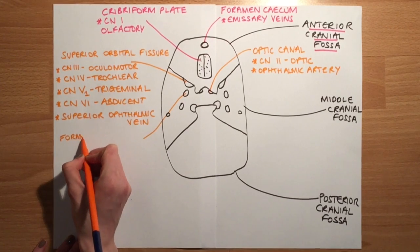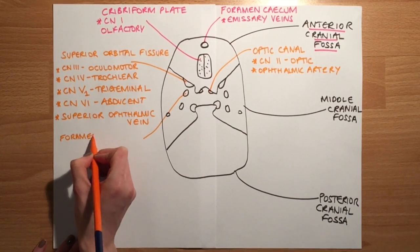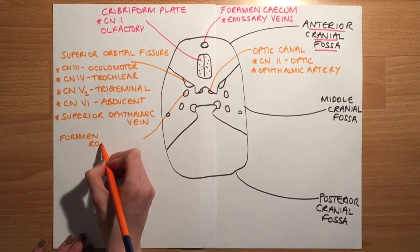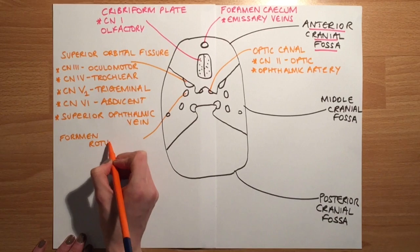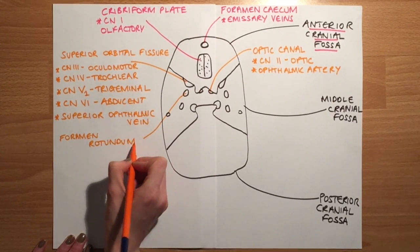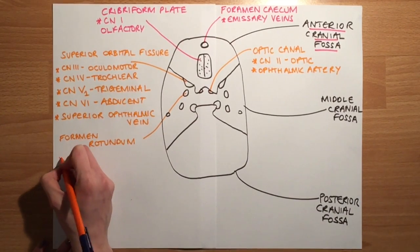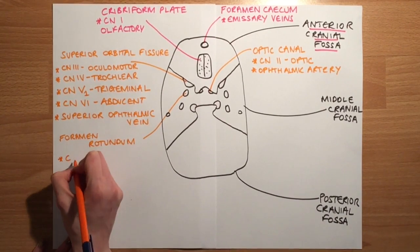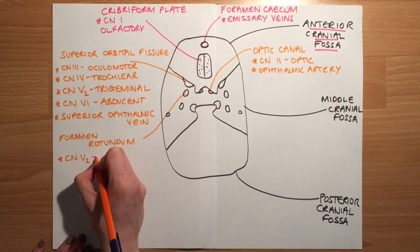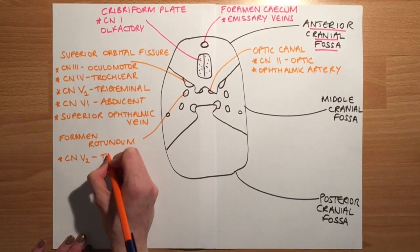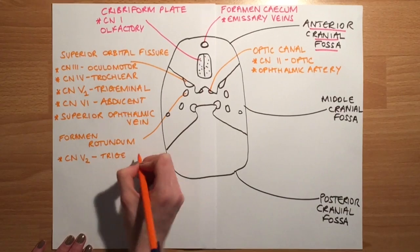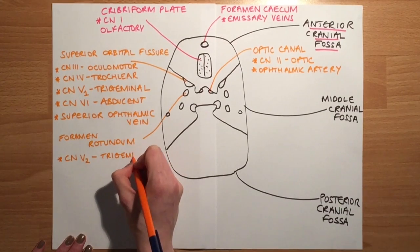Next we have the foramen rotundum, which transmits only one structure: cranial nerve five, second division — the second division of the trigeminal nerve — known as the maxillary nerve.